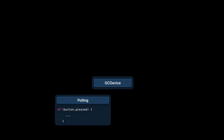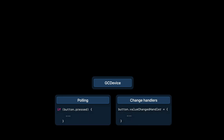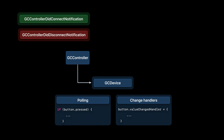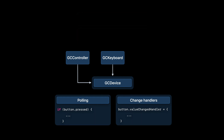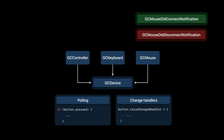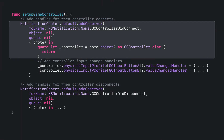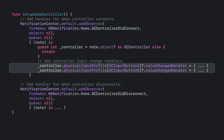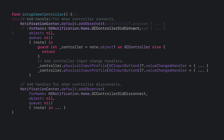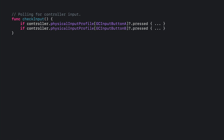The basics of the game controller framework is reacting to notifications about different kinds of GC device objects connecting and disconnecting, and either polling active devices for input state or setting up value changed handlers to be notified about input state changes. When controllers connect or disconnect from the system, GC controller objects are created and removed, and you are sent GC controller did connect and GC controller did disconnect notifications. It's the same pattern with GC keyboard objects and GC mouse objects. All you need to do is add an observer to find out when a GC controller object connects or disconnects, then set up change handlers or poll the state of the controller.